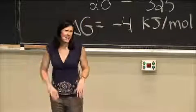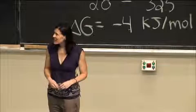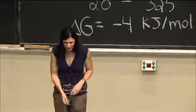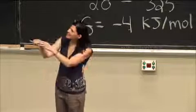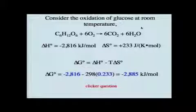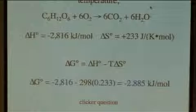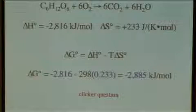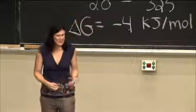All right, so let's make sure that's what we do see when we calculate this for the oxidation of glucose here. If we do this and we plug in our numbers, we see that delta G is going to be equal to negative 2816 minus the temperature, room temperature, times, remember to put 0.233 because we need to convert from joules to kilojoules for our entropy term. What we find out is that this reaction has a delta G of negative 2885 kilojoules per mole. This is a spontaneous reaction.